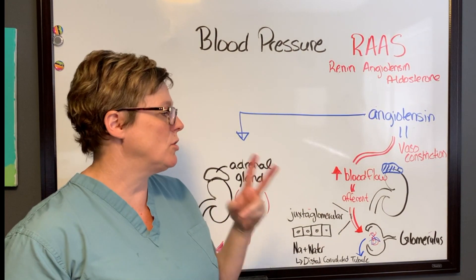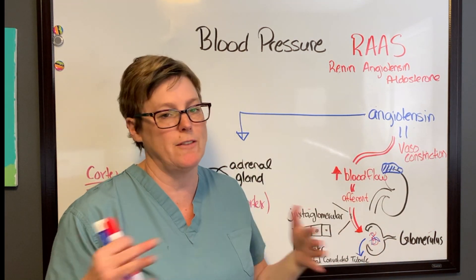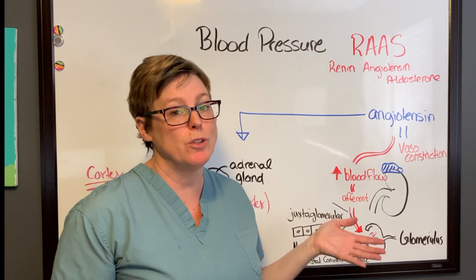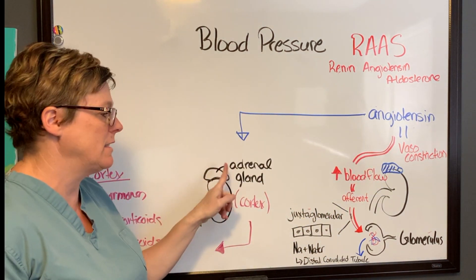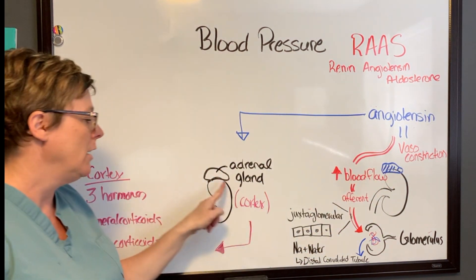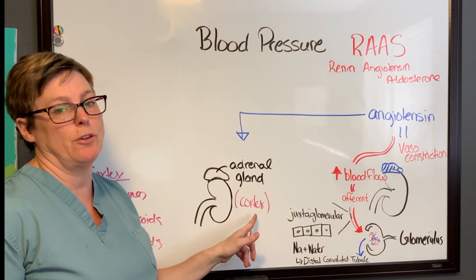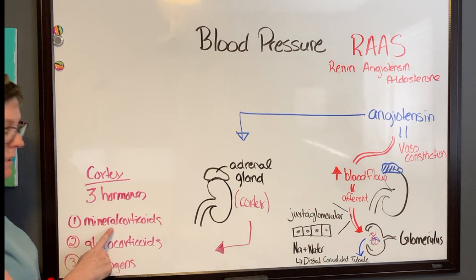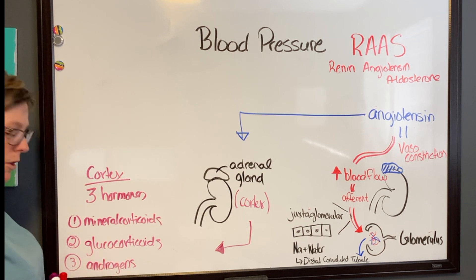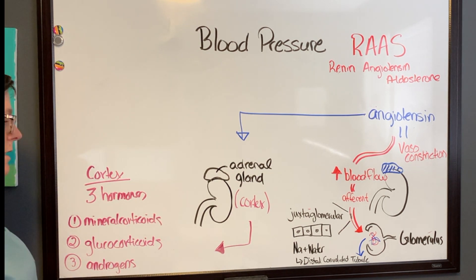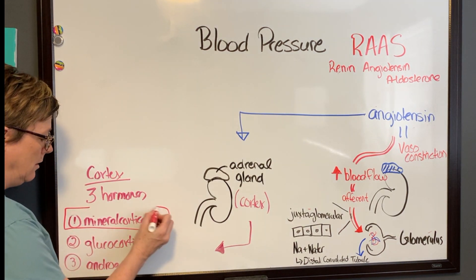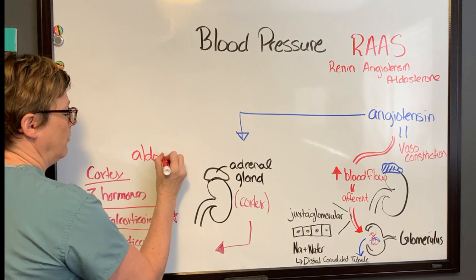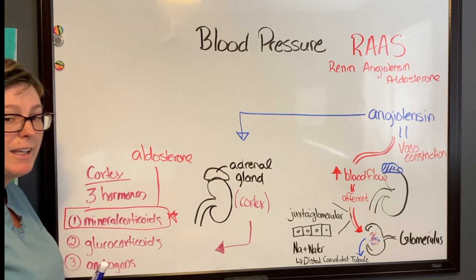Angiotensin 2 will cause vasoconstriction — it's known as a very powerful vasoconstrictor — and that's going to increase blood pressure. But there's more: angiotensin 2 also affects the adrenal gland, the little hat on top of the kidney, and in particular it goes straight to the cortex. The cortex has three different hormone classifications it can secrete: mineralocorticoids, glucocorticoids, and androgens. In this case we are focusing on mineralocorticoids. This is where aldosterone is produced.